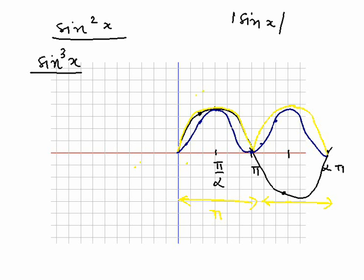Now, how about sine cube x? Here we are multiplying sine x with itself three times. Sine x with itself three times.